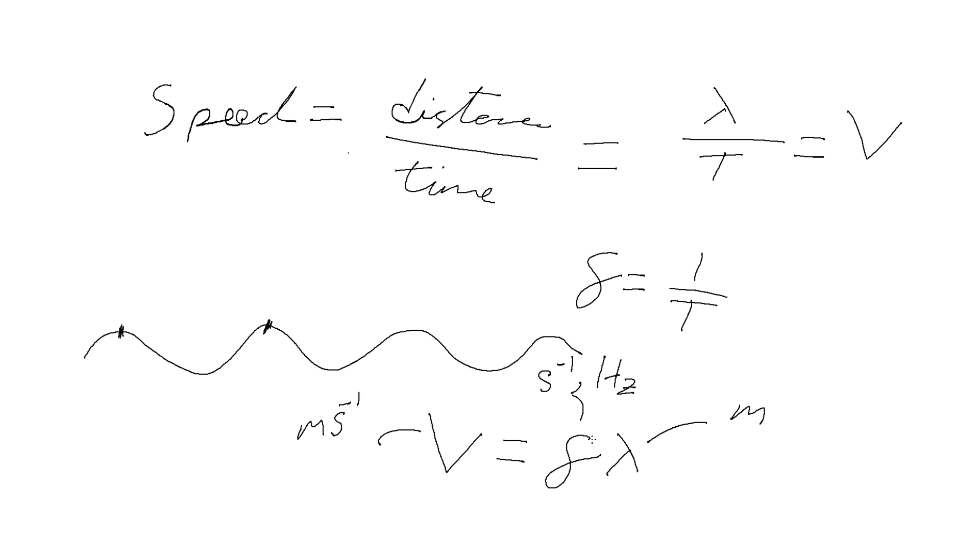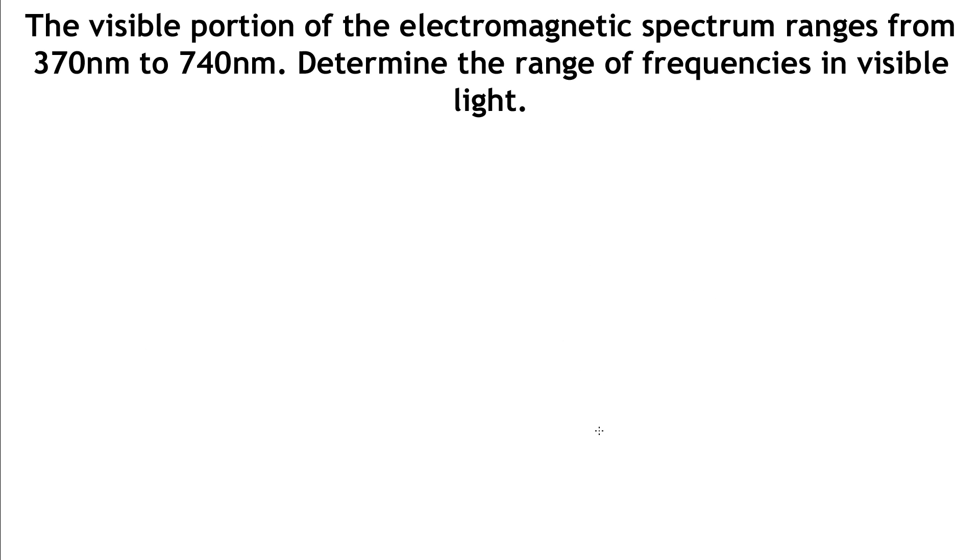So a nice straightforward equation. Now we can look at an example. The visible portion of the electromagnetic spectrum goes from 370 nanometers to 740 nanometers. Determine the range of frequencies in visible light.